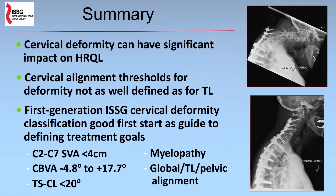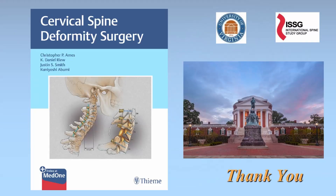In summary, cervical deformity can have significant impact on health-related quality of life. The cervical alignment thresholds for deformity are not as well defined as those for thoracolumbar alignment, but they're catching up. The first-generation ISSG cervical deformity classification appears to be a good first start as a guide to help define treatment goals. This is evolving, and as we learn more, other parameters may be added and further refinement of goals made. Thank you for your attention. There is a recent book through TEMA on cervical spine deformity for those who want to learn more.